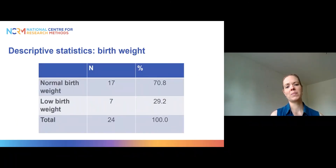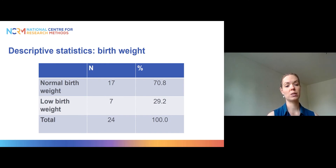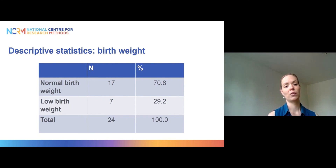Here is the distribution of our outcome variable, birth weight. We have 17 babies born with normal birth weight and 7 babies with low birth weight — approximately 71% normal and 29% low birth weight in our dataset, with 24 observations in total.